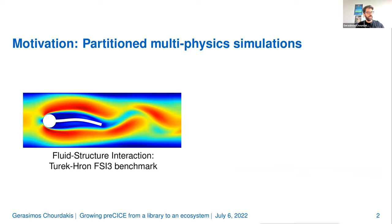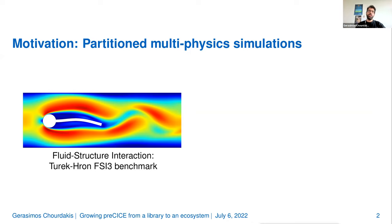The motivation for a coupling library, or at least for preCICE, is that we want to do partitioned multi-physics simulations. A very classical example is fluid structure interaction. You see a famous benchmark by Turek and Kron where you have a tunnel flow — a CFD code — and an obstacle in the middle. The flow around the cylinder creates a Kármán vortex street. Downstream, you fix a flexible flap, which will then start moving based on these oscillations. Instead of solving everything in one code, we want to reuse the expertise of a structure solver, which we plug into our flow simulation. We can do this with preCICE.